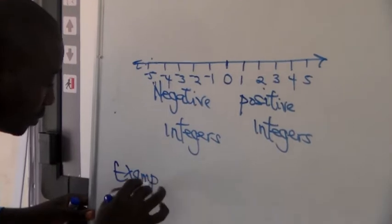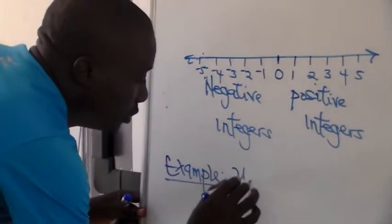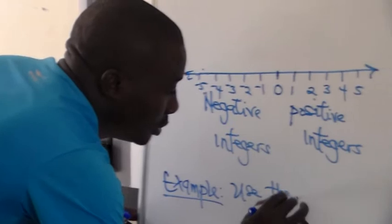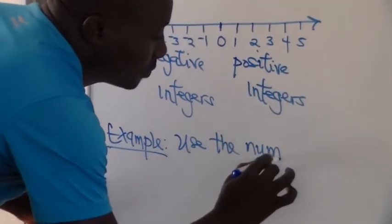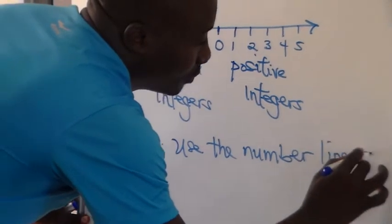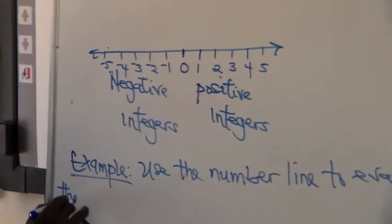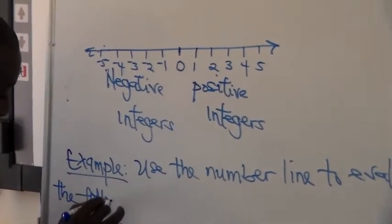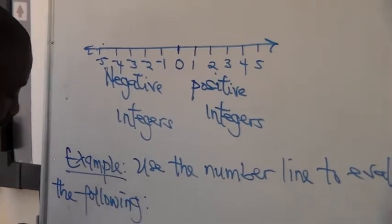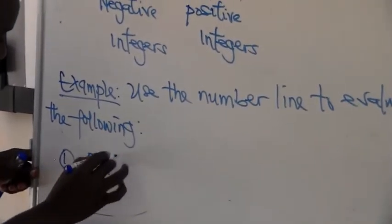Now what is the number line used for? The number line is used for addition and subtraction of integers. Now let's use the number line to do some calculation. Use the number line to evaluate the following. The first one: five plus three.